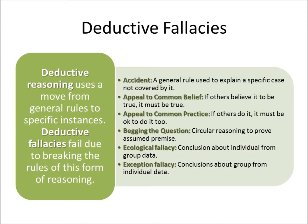Deductive reasoning uses a move from general rules to specific instances. Deductive fallacies fail due to breaking the rules of this form of reasoning. Here are six different deductive fallacies: Accident — a general rule used to explain a specific case not covered by it. Appeal to common belief — if others believe it to be true, it must be true. Appeal to common practice — if others do it, it must be okay to do it too. Begging the question — circular reasoning to prove an assumed premise. Ecological fallacy — conclusions about an individual from group data. Exception fallacy — conclusions about a group from individual data. We'll cover these fallacies in more detail later in the course.